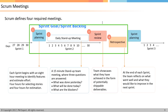The Sprint Planning Meeting is a time-boxed meeting. The time box is generally eight hours for a monthly sprint — a four-week sprint. As the time box of the Sprint decreases, we decrease the duration of the Sprint Planning Meeting as well. For example, for two-week Sprints, it can be two hours.